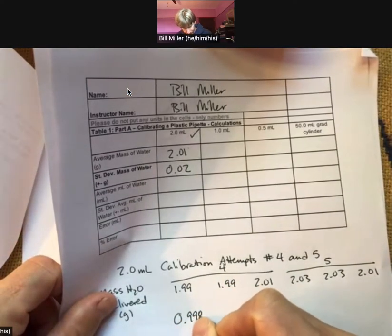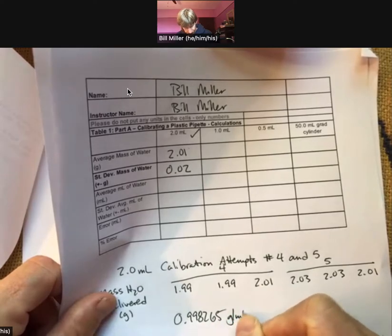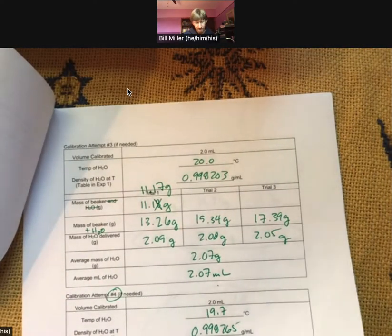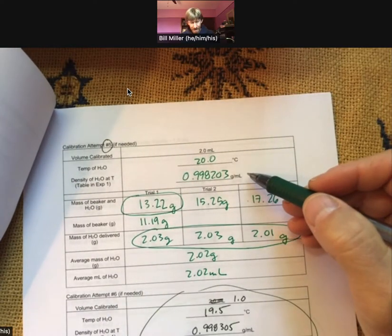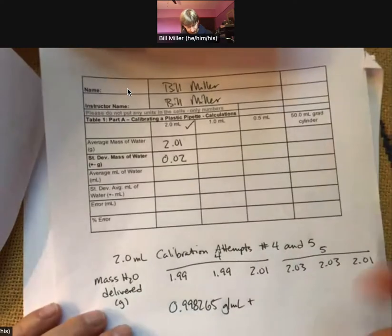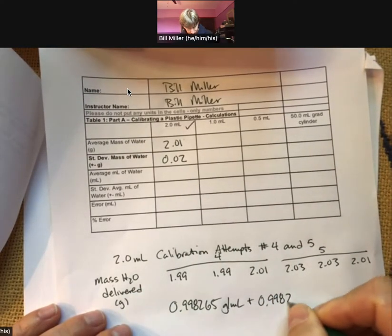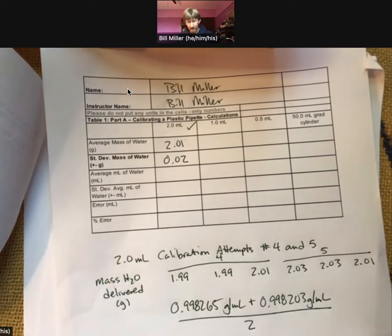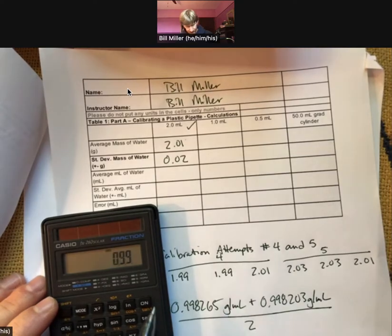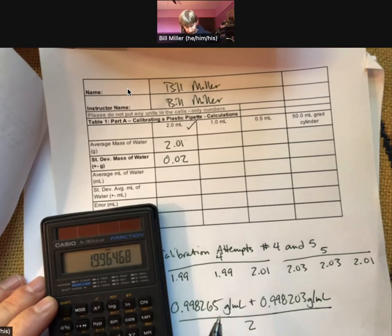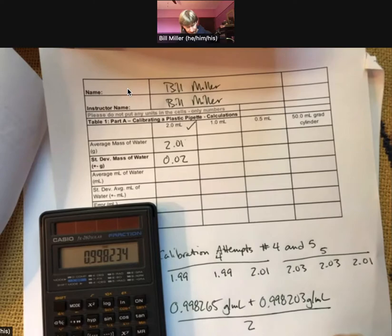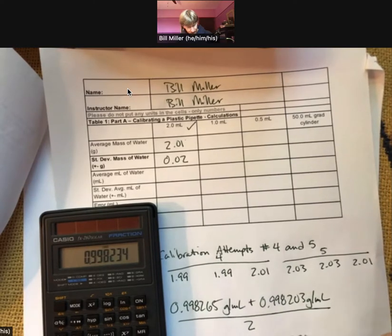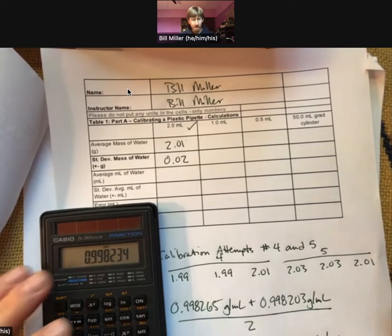0.998265 is my density for three of the values, and 0.998203. I get 0.998265 plus 0.998203 divided by two. I get 0.998234 grams per milliliter.